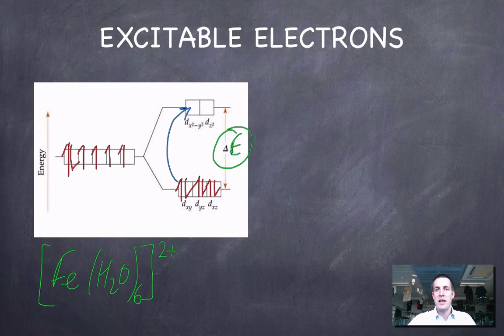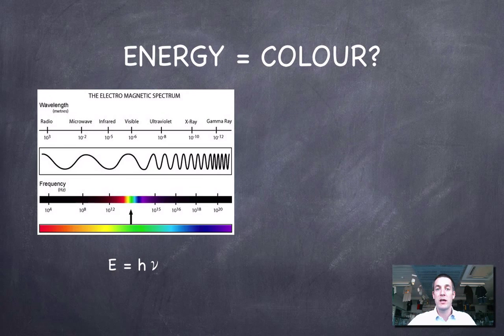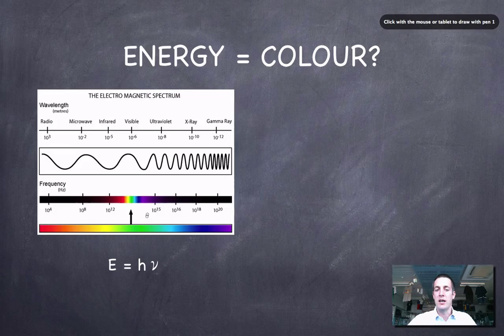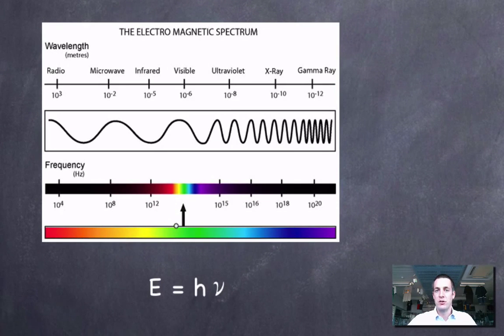And what's that energy linked to? Well, you might remember before, when we were looking at the absorption and emission spectra of hydrogen, we said that the energy of light is related to its color. So in other words, if this ion was absorbing photons of a particular energy in order to promote these electrons, then the color of photons that it absorbed would depend on that energy gap.